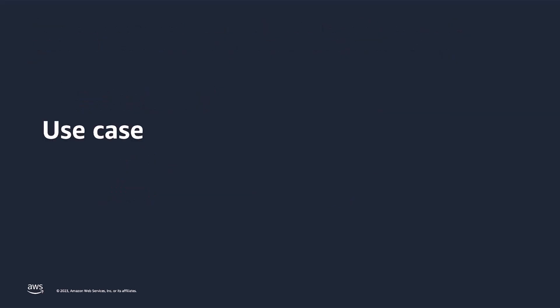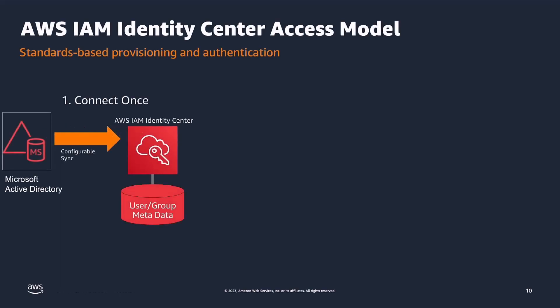Let's talk about the use case for this video. The AWS IAM Identity Center access model allows customers to bring in their existing Active Directory credentials to provide single sign-on access to AWS accounts and Amazon EC2 instances. As you can see in the picture, administrators can continue managing users in either AWS-managed Microsoft AD hosted using AWS Directory Service or a self-managed AD hosted on Amazon EC2 or on-premises.